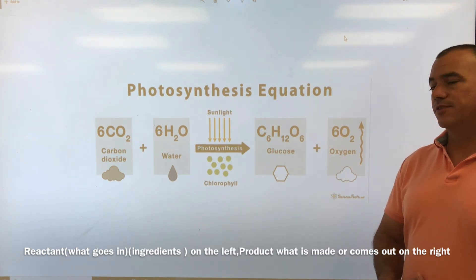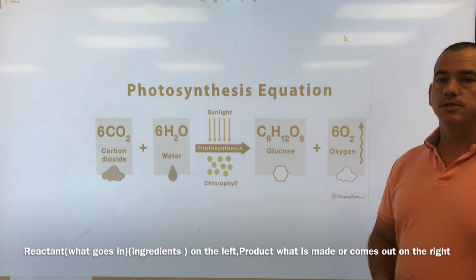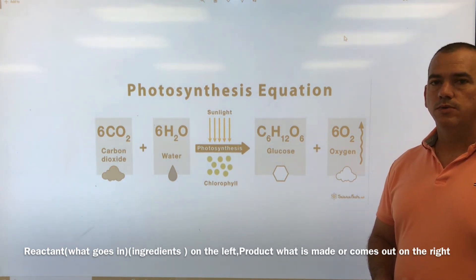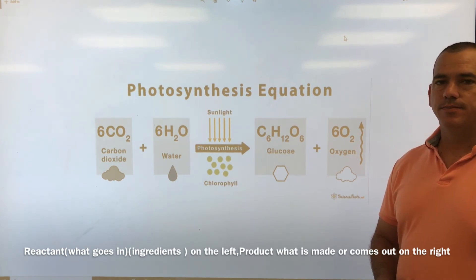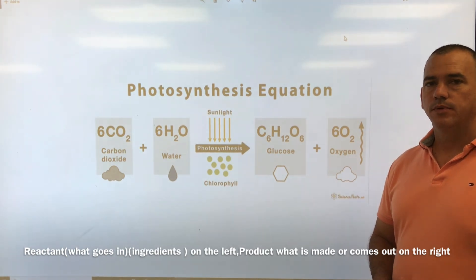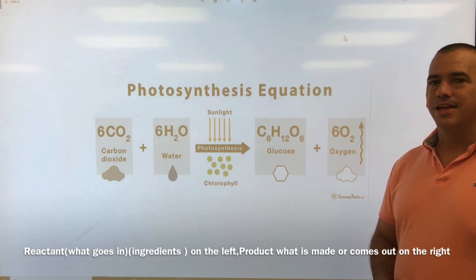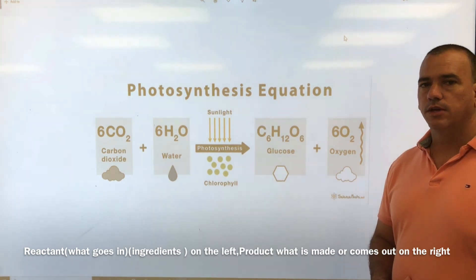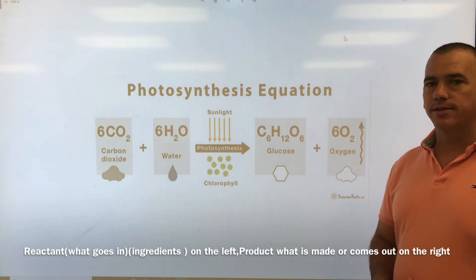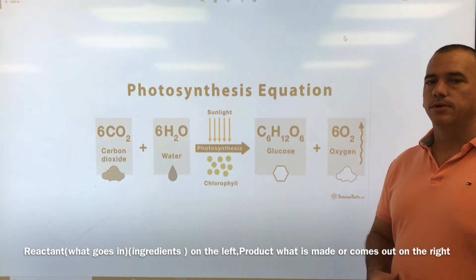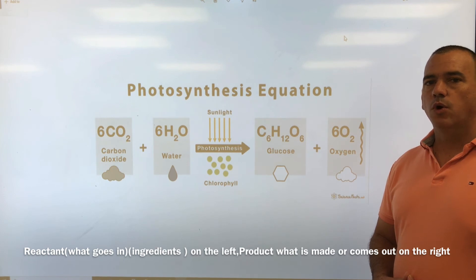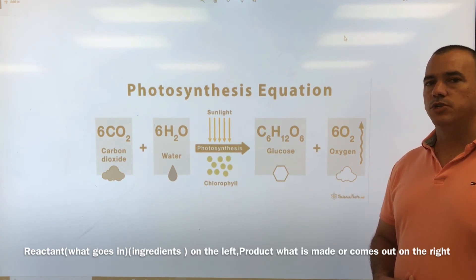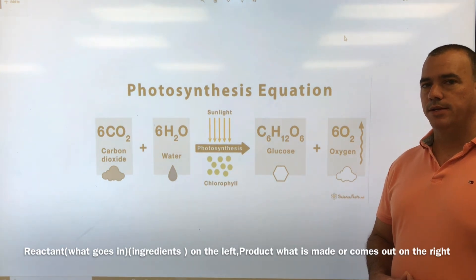The formula is: 6CO2 plus 6H2O, with sunlight added, produces C6H12O6 plus 6O2. Think of the arrow like an equal sign. The 6CO2 and 6H2O are on the left — those are your reactants, like your ingredients. The C6H12O6 and 6O2 are on the right — those are your products that have been made in photosynthesis.